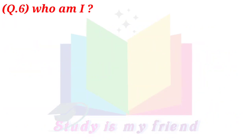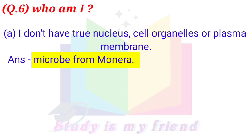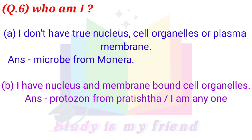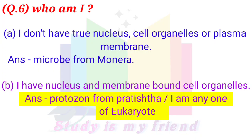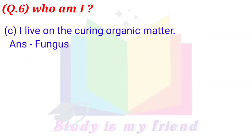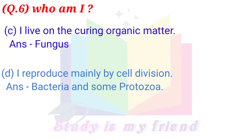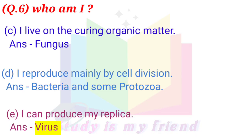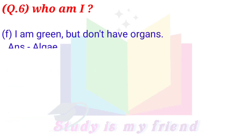Who Am I? A. I don't have a true nucleus, cell organelles, or plasma membrane. Answer: Microbe from Monera. B. I have a nucleus and membrane-bound cell organelles. Answer: Protozoan from Protista — I am a eukaryote. C. I live on decaying organic matter. Answer: Fungus. D. I reproduce mainly by cell division. Answer: Bacteria and some protozoa. E. I can produce my own replica. Answer: Virus. F. I am green but don't have organs. Answer: Algae.